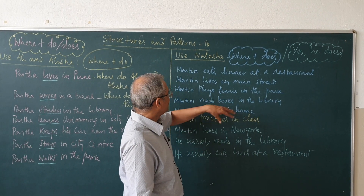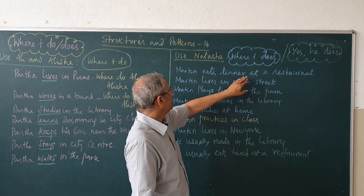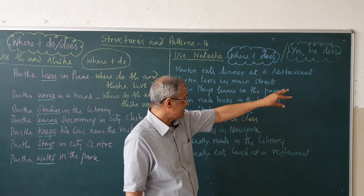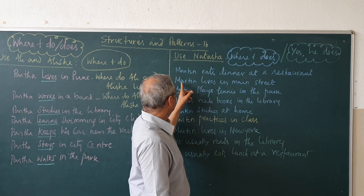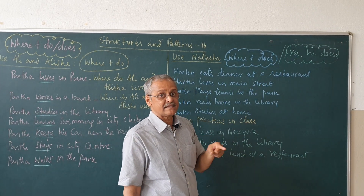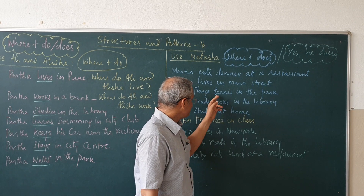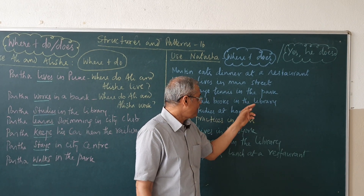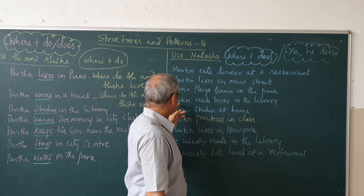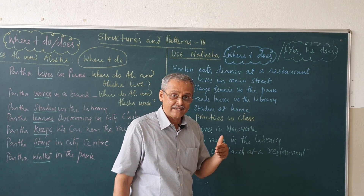Now another pattern: Does Martin eat dinner at a restaurant? Yes, he does. Does Martin live in Main Street? Yes, he does. Does Martin play tennis in the park? Yes, he does. Does Martin read books in the library? Yes, he does.